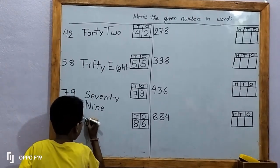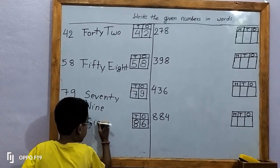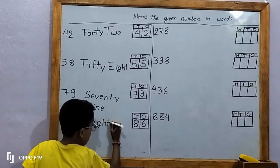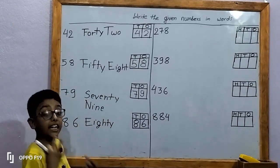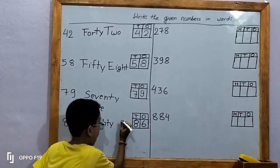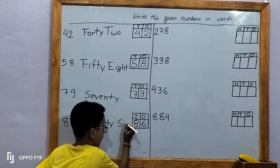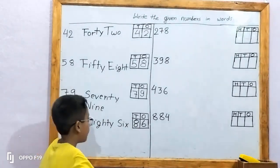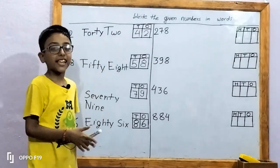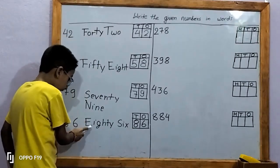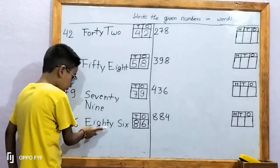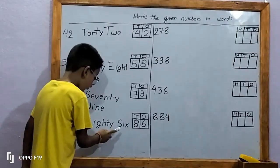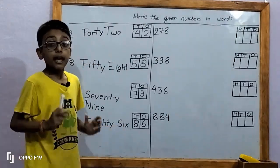Let's write in words: E-I-G-H-T-Y, eighty. S-I-X, six. 86. Let's spell 86 guys: E-I-G-H-T-Y, S-I-X, six. 86.